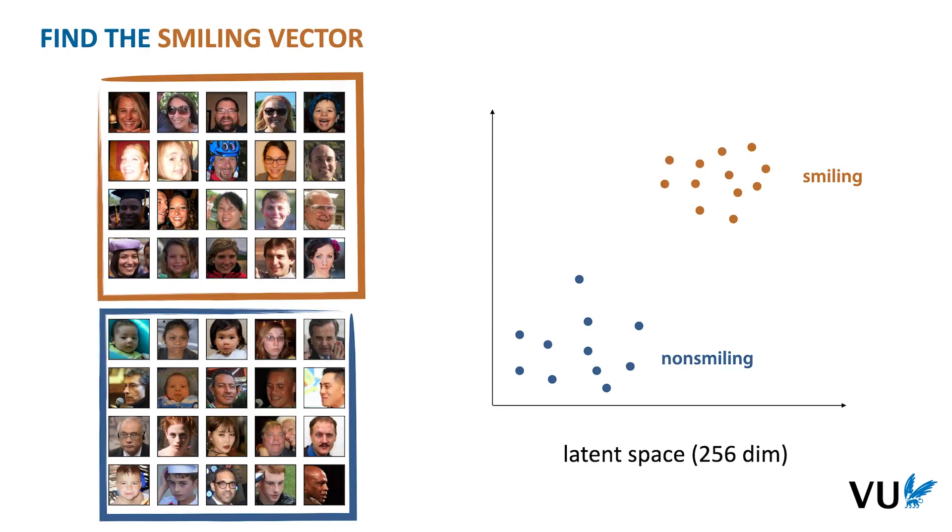Another thing we can do is to study the latent space based on the examples that we have. For instance, we can see whether smiling and non-smiling people end up in distinct parts of the latent space. We just label a small amount of instances as smiling and non-smiling, in this case just 20 of each. And if we're lucky, when we map these to the latent space by feeding them to the encoder, they form distinct clusters. If we compute the means of these clusters, we can draw a vector between them. We can think of this as a smiling vector. The further we push people along this line, the more the decoded point will look like a smiling person.